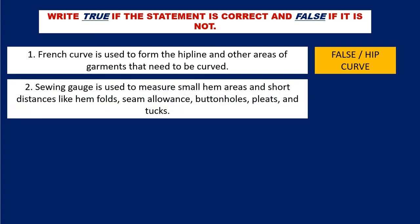Question number 2: Sewing gauge is used to measure small hem areas and short distances like hem folds, seam allowance, buttonholes, cleats, and tacks. The correct answer is true.